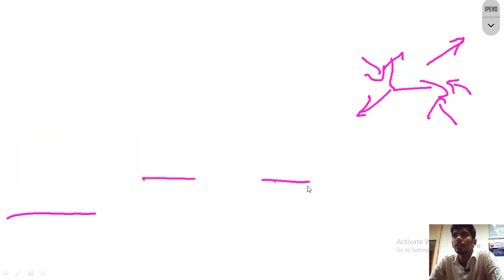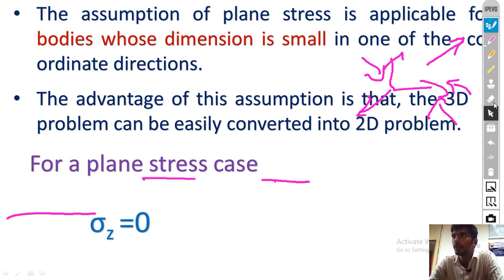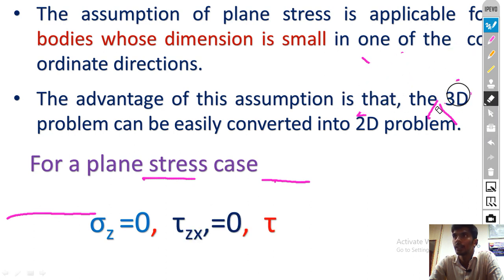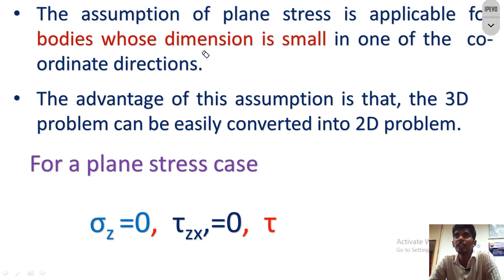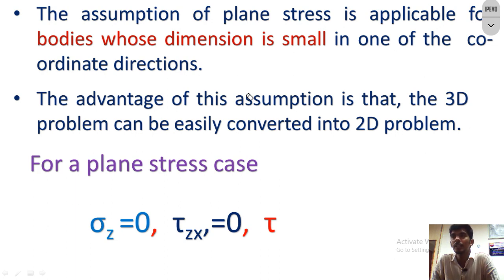Now the further assumptions we need to consider while describing the plane stress condition. First assumption: the loads are acting in-plane and also parallel to the surface. Second assumption: the dimension of the body is very small in the lateral direction, that is the z direction. In the simplest way, for a plane stress element, the thickness dimension should be smaller compared to the length direction — meaning the z directional dimension is very small compared to the x and y directional dimensions. The advantage of this assumption is that the 3D problem can be easily converted into a 2D problem.